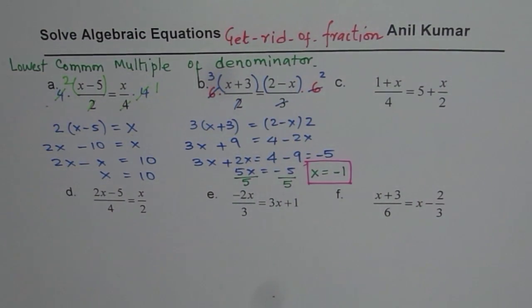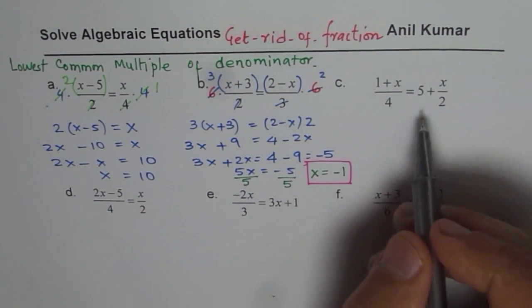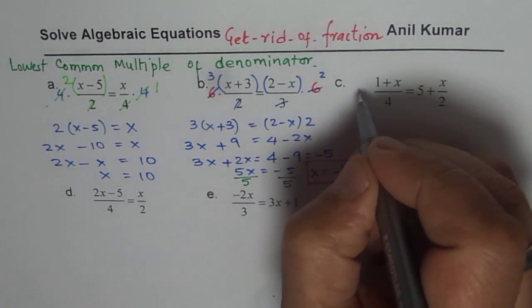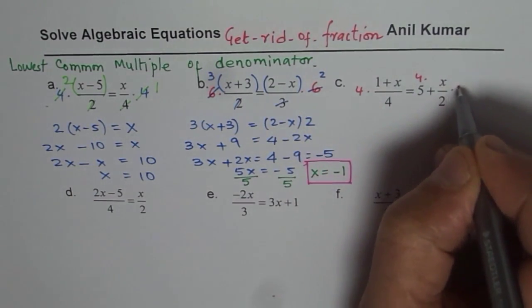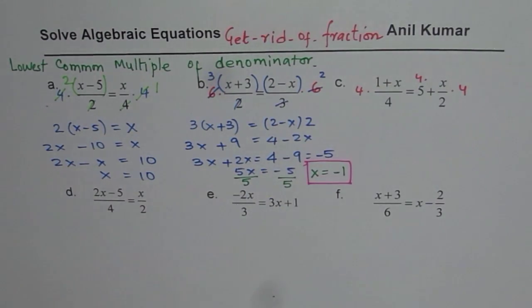Now let's look into the third one. In this particular case, the lowest common multiple of 4 and 2 is 4. So let's multiply everything by 4. First term, 5 also by 4 and this also by 4. So when I simplify, what do I get?